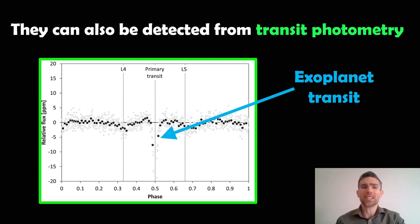But you can also directly detect them through transit photometry. So that's actually where they block out some of the light, like the exoplanet. Now these objects themselves are going to be smaller than the planet, so they're going to be quite hard to detect. But this is an example here. So we've got the full orbital phase of the exoplanet. So the phase from zero to one is one orbit. The primary transit is actually the exoplanet, which is bang in the middle at half the phase.